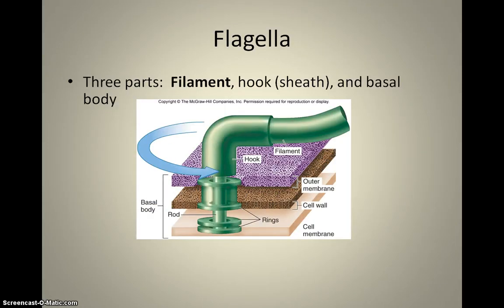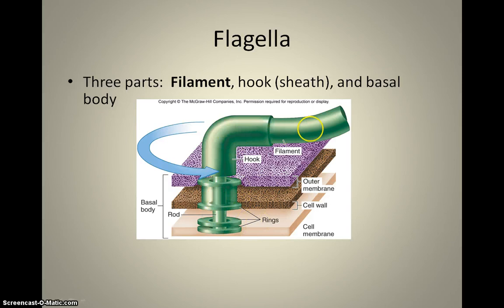The first external structure is the flagella, which is used for locomotion. There are three parts: the filament, which is the tail-like part; the hook; and the basal body. The flagella is made up completely of protein and can only rotate in one direction. The basal body is where it's secured into the membrane, the hook is the turn, and the filament is the whip of the tail, causing the bacterium to move in a specific direction.